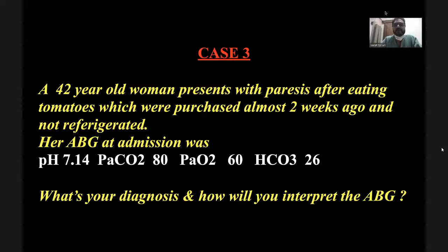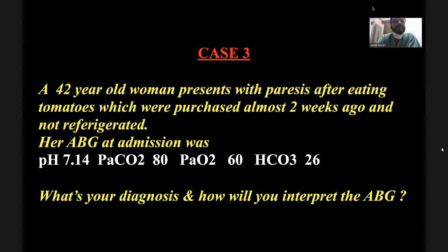Case 3: A 42-year-old woman presents with paralysis after eating tomatoes purchased two weeks ago that were not refrigerated. Her blood gas: pH 7.14, CO2 80, O2 60, bicarb 26. From history, there is a poisoning component. Any poisoning can cause GI upset — nausea, vomiting, diarrhea — or muscle weakness because of toxins. Muscle weakness would cause respiratory weakness, leading to CO2 retention.